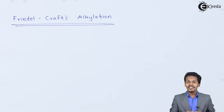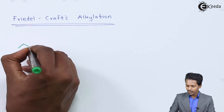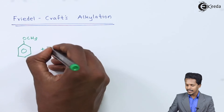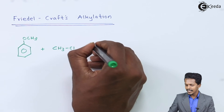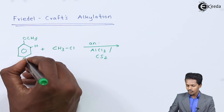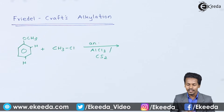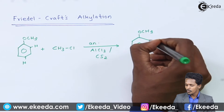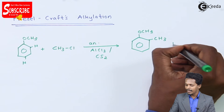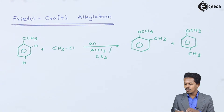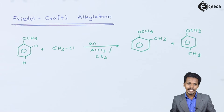The next reaction is Friedel-Crafts alkylation. Anisole is treated with methyl chloride (CH₃Cl) in the presence of anhydrous AlCl₃ and CS₂. This is known as methylation of anisole. Two possible products are obtained: a methyl group attached at the ortho position and a methyl group attached at the para position. The byproduct is removed as HCl.